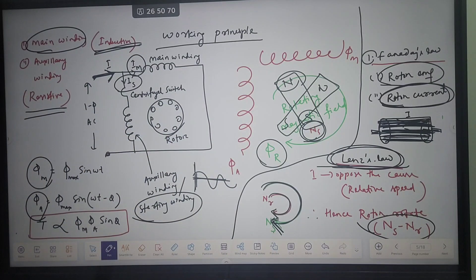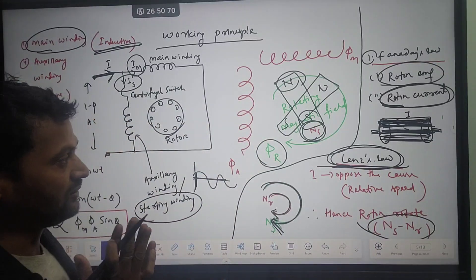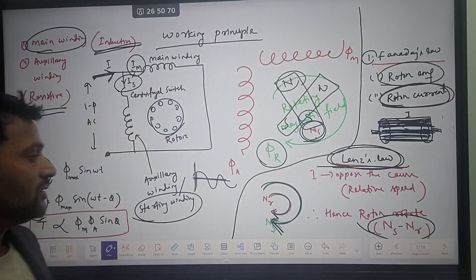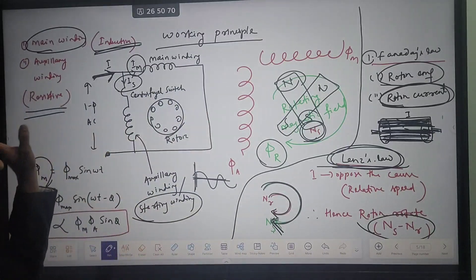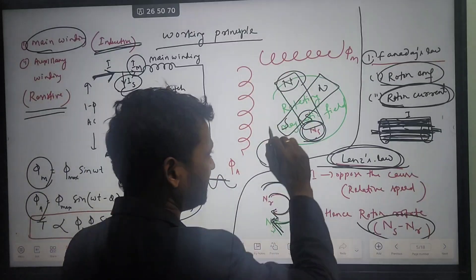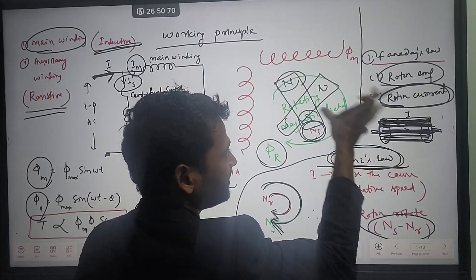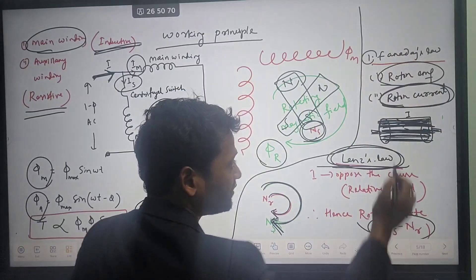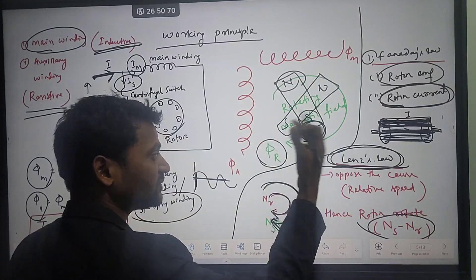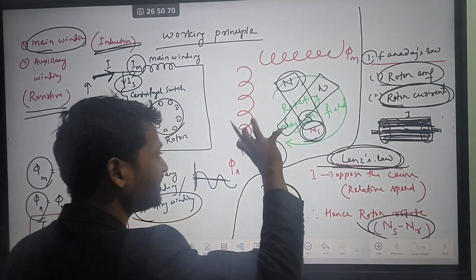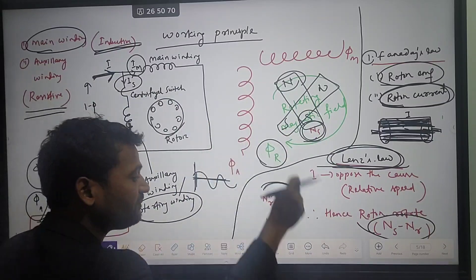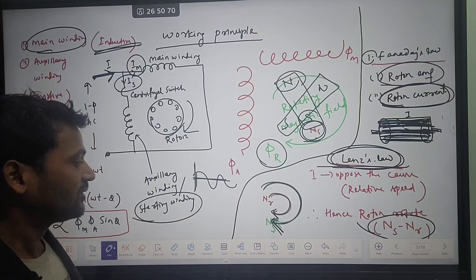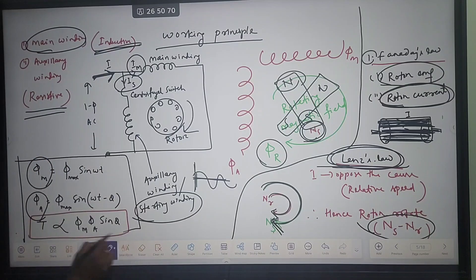For exam purposes, you can write: when single-phase supply is given to the stator winding, a revolving magnetic field is developed. The revolving magnetic field rotates and since the rotor has rotor conductors inside, EMF is induced in the rotor as per Faraday's law. Rotor current flows — since it is short-circuited, the current may be heavy. As per Lenz's law, that current opposes the cause, which is the relative speed. So the rotor has to move in the same direction as the magnetic field — if the magnetic field is clockwise, the rotor also moves clockwise.